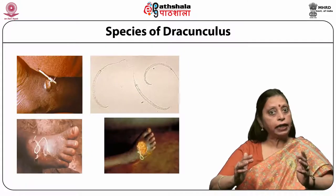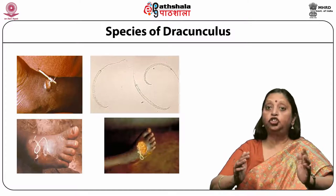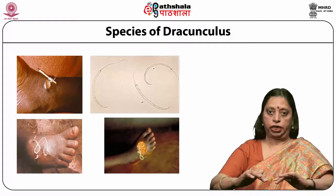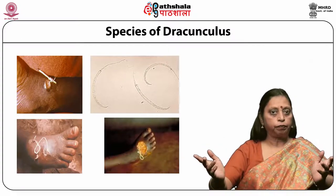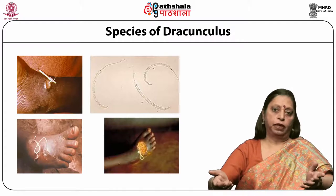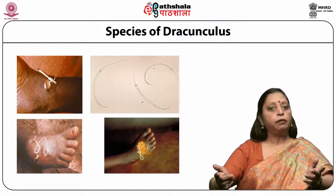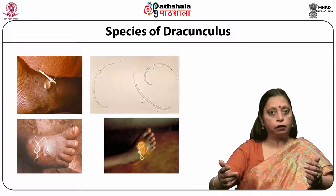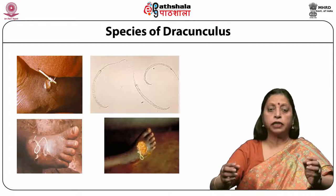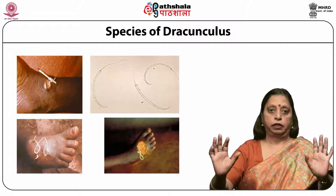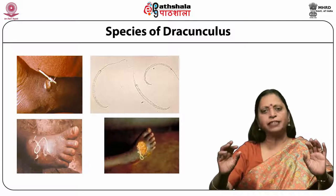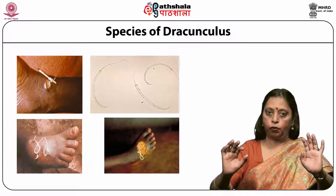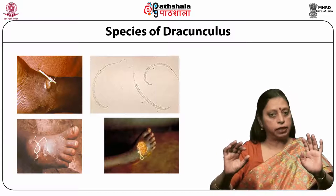Colloquially, Dracunculus is named as Guinea worm, so called because it was discovered in Guinea in West Africa. It is also known as Medina worm, commonly found in Medina. In the Bible, Dracunculus is called the Fiery Serpent. The Greeks and Romans called it Little Snakes. Dragon worm and serpent worm are some other names given to it.